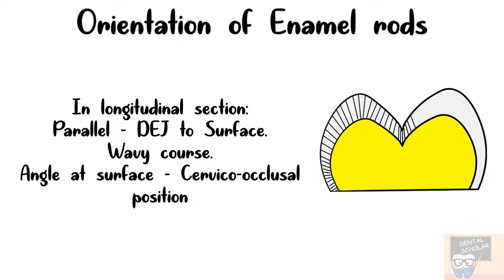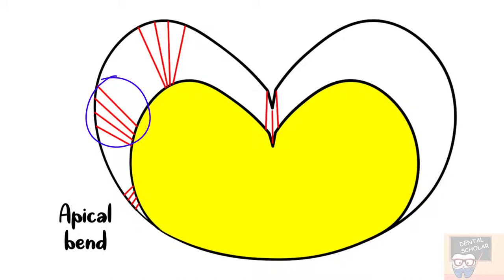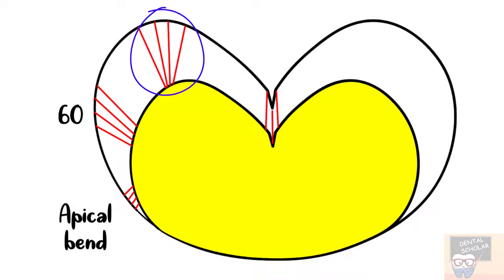The angle the enamel rods make at the surface depends on their cervico-occlusal position. For example, at the cervical margin, the rods bend apically in permanent teeth, while they will be more horizontal in a primary tooth. On the lateral surface — buccal, lingual, mesial, or distal — the rods make an angle of about 60 degrees with the surface. Around the cusp tips and incisal edges, the angle is about 90 degrees.